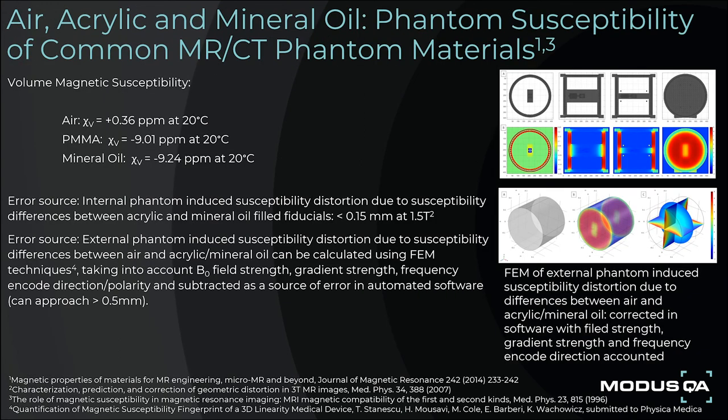Phantom susceptibility-induced distortion is identified as a source of measurement error. The difference in volume magnetic susceptibility between acrylic and mineral oil-filled fiducials has been previously shown to add an estimated phantom-induced distortion of less than 0.15 mm in the frequency encode direction at 1.5 T. The external phantom-induced susceptibility distortion due to susceptibility differences between air and acrylic and mineral oil can be calculated using finite element modeling techniques, taking into account B0 field strength, gradient strength, frequency encode direction, and polarity, and subtracted as a source of error in automated software.